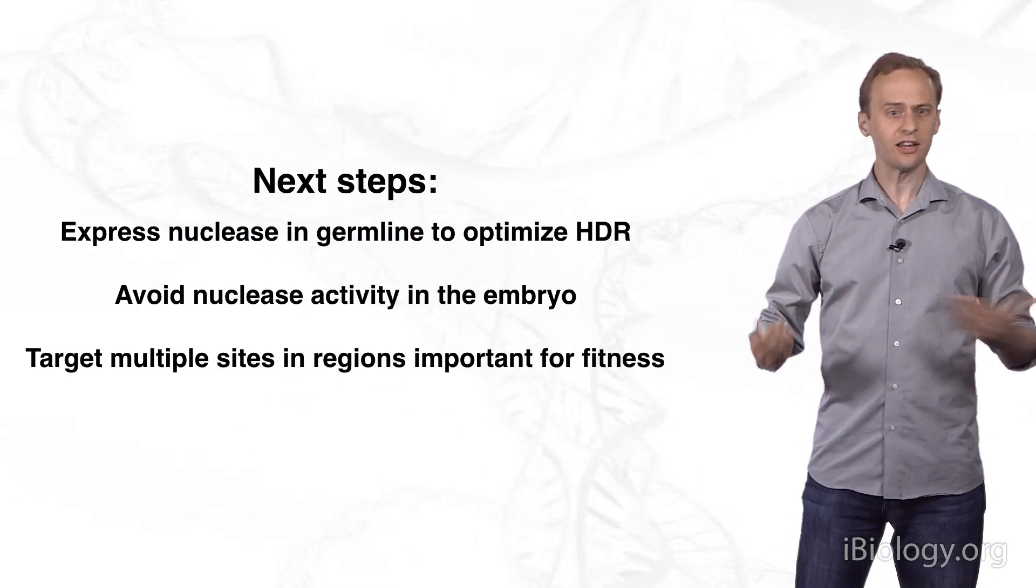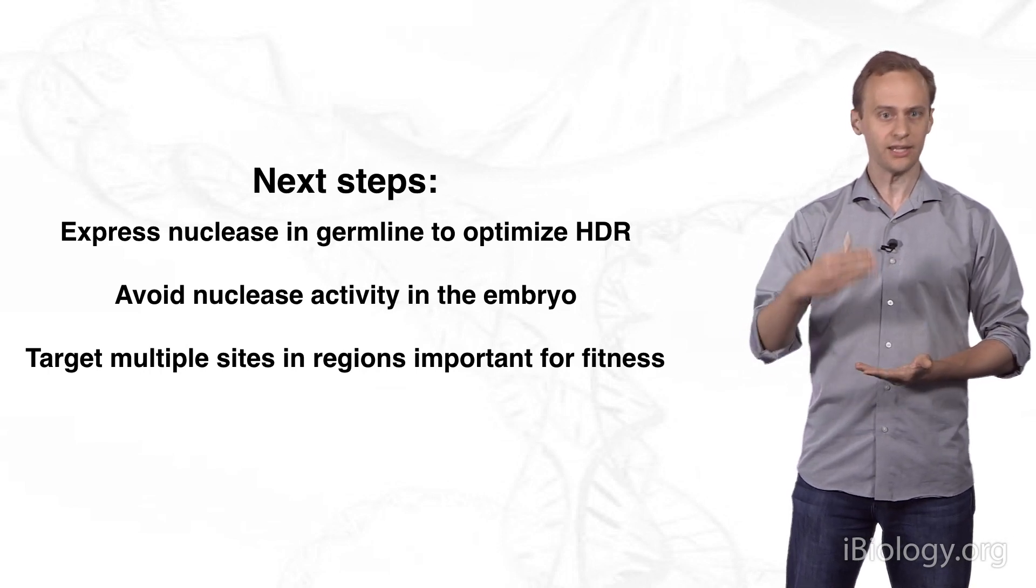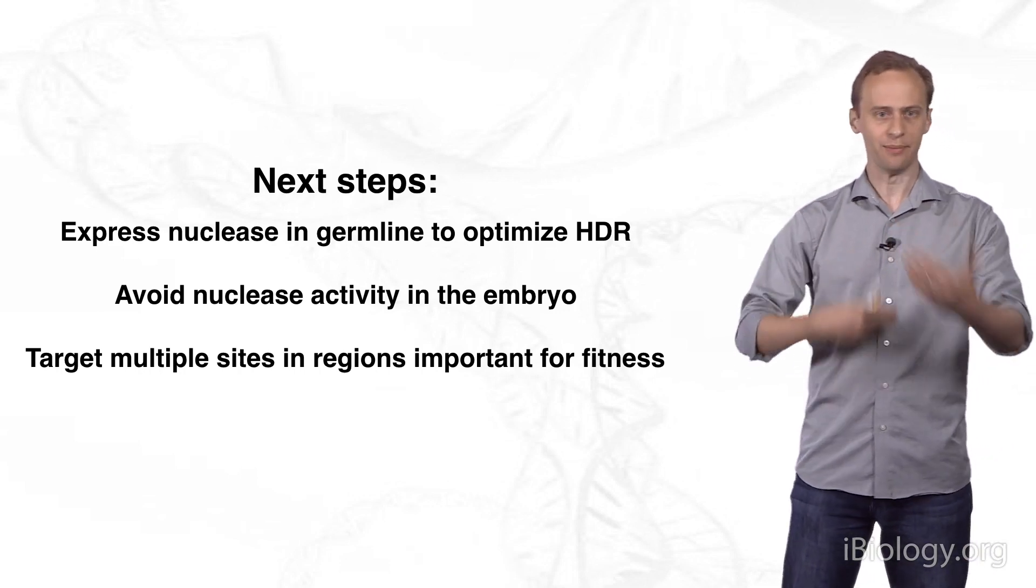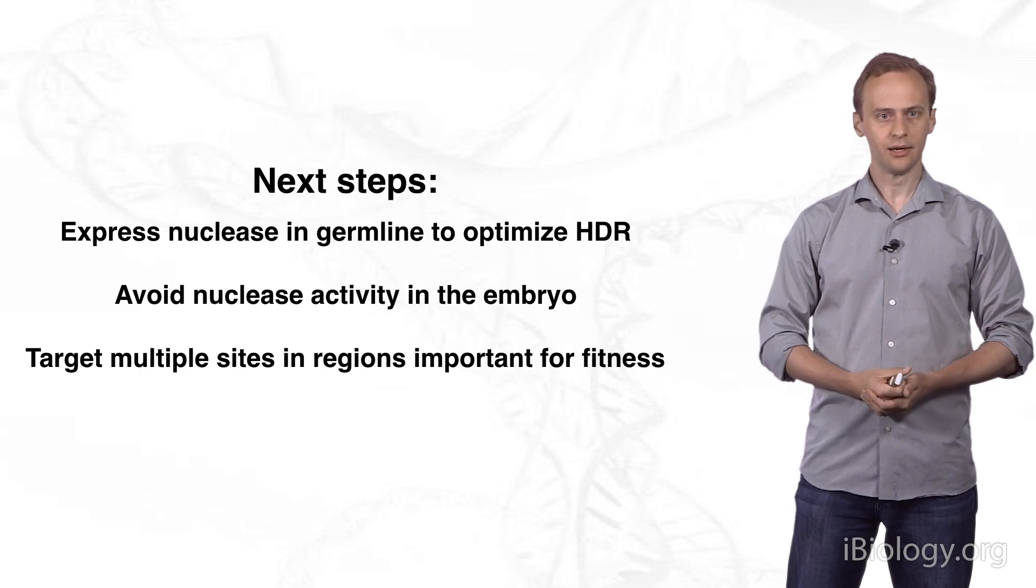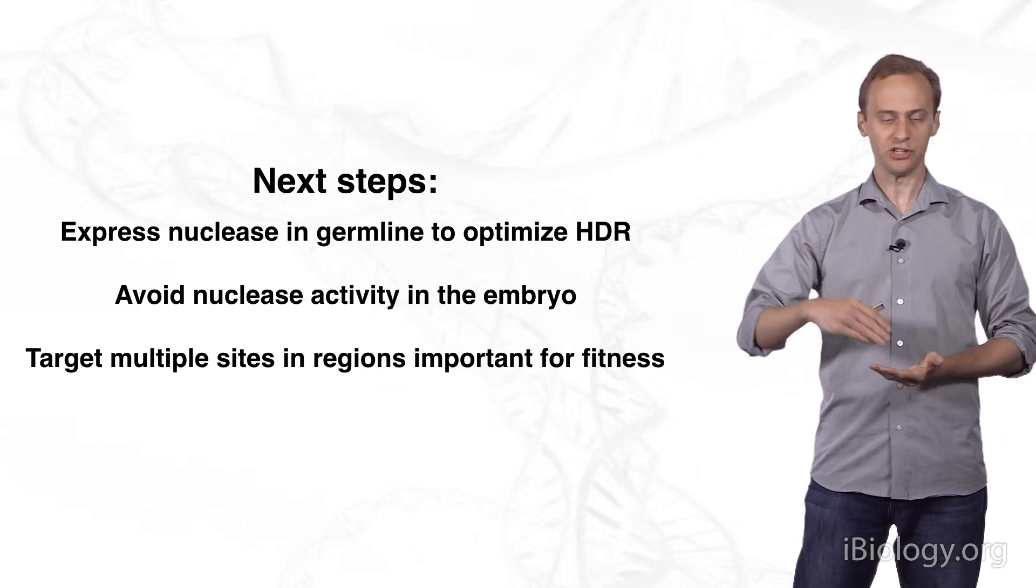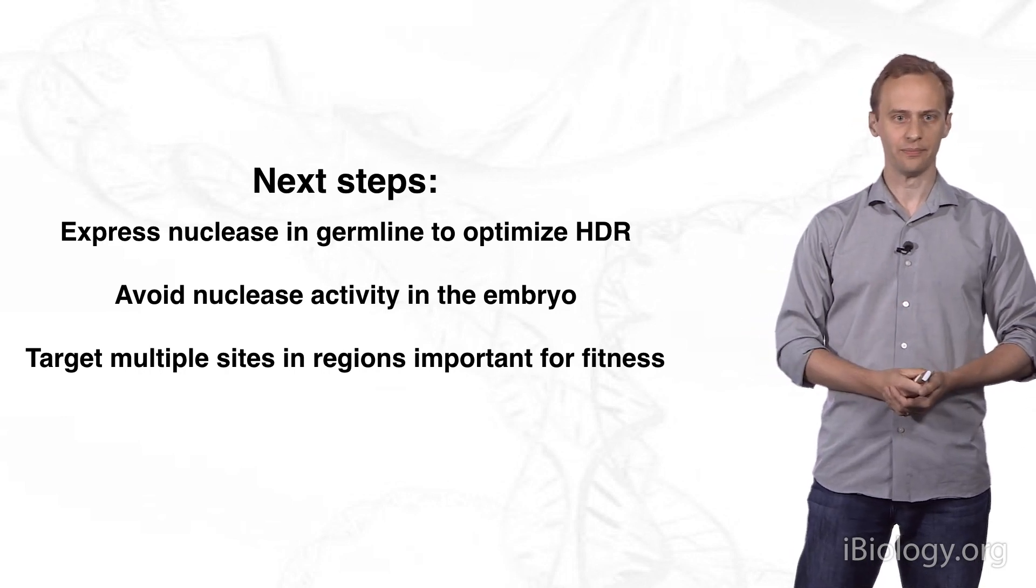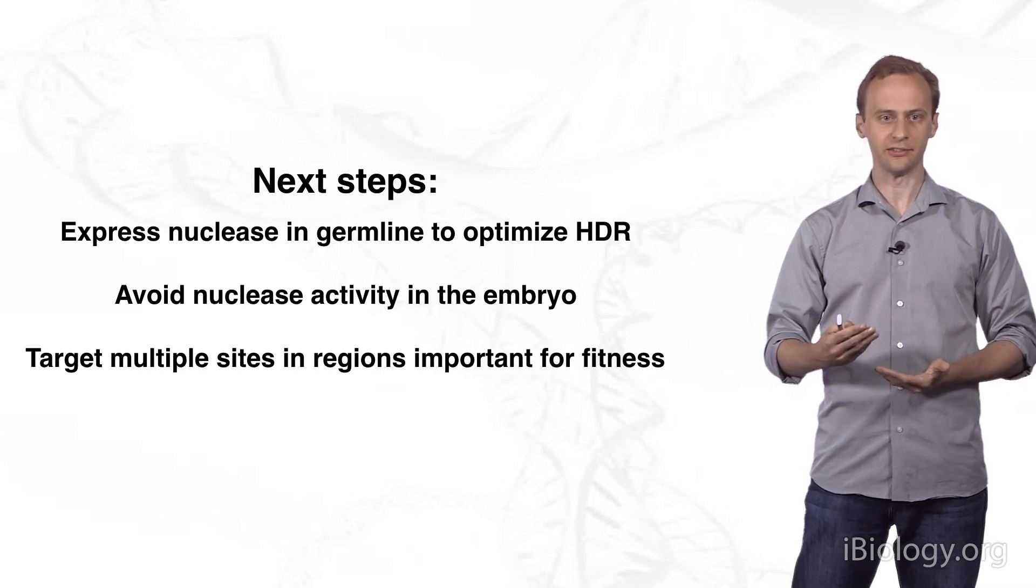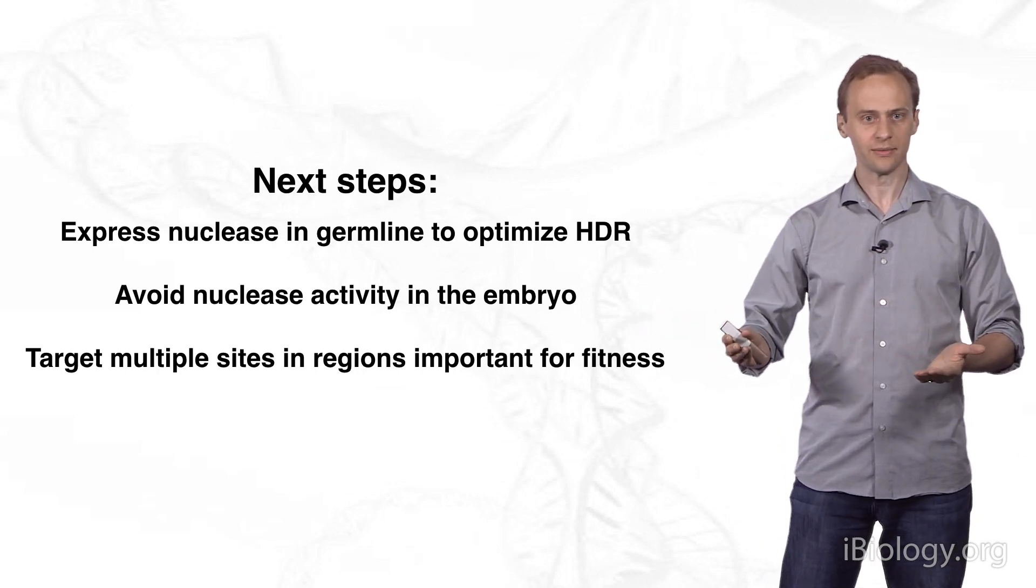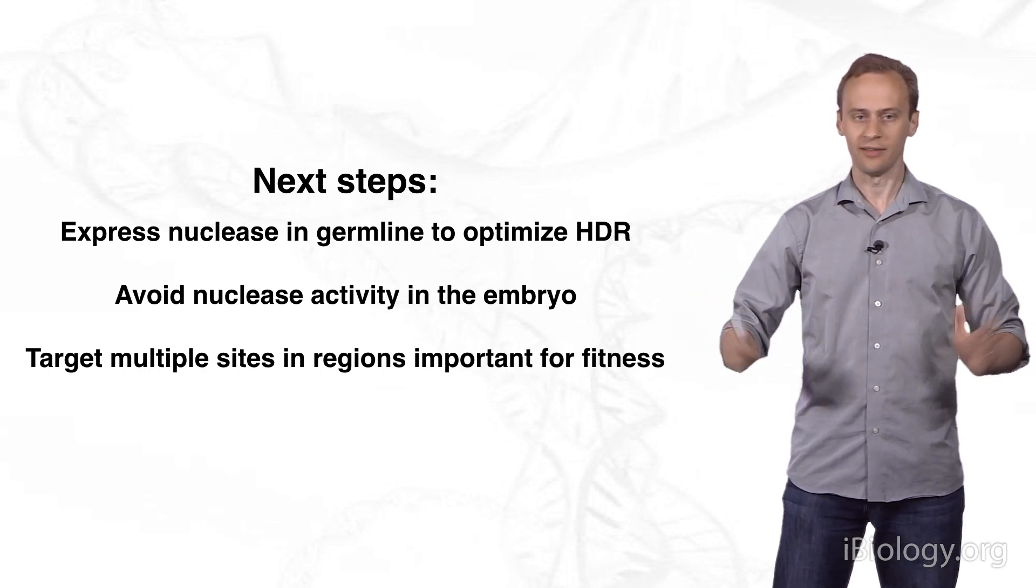What needs to be done next to continue to develop standard gene drives? Several steps need to be optimized in each organism for a given application. Those include learning how to express the nuclease at a time that maximizes the frequency of homology-directed repair. We also need to ensure that cutting does not take place in the embryo, because homology-directed repair is typically lower, and population suppression will not work if cutting happens in the embryo. Finally, we need to continue to develop alternative CRISPR editing systems, such as Cas12a, that allow us to target multiple sites in regions important for fitness without introducing repetitive DNA sequences throughout the drive system itself.